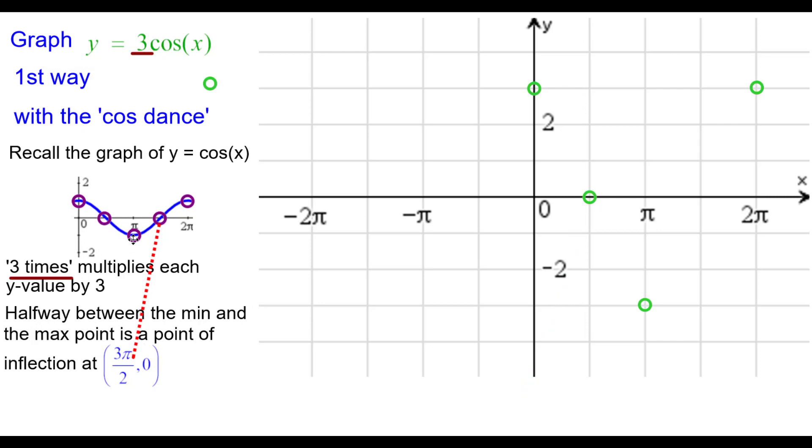And halfway between the min and this max is another point of inflection. Also vertically stretched but again unchanged because 3 times 0 is 0. So 3 pi over 2 comma 0.